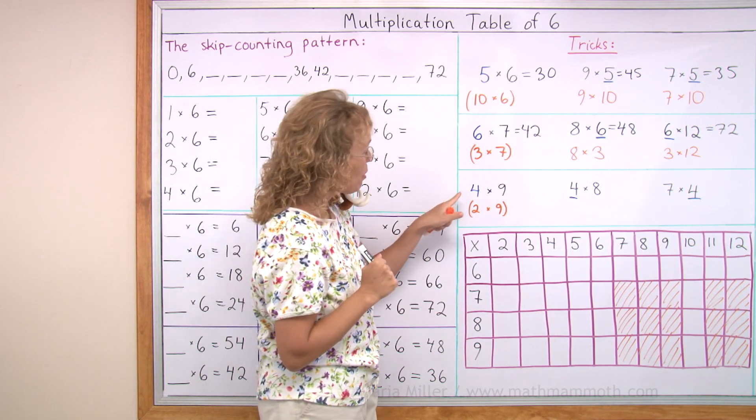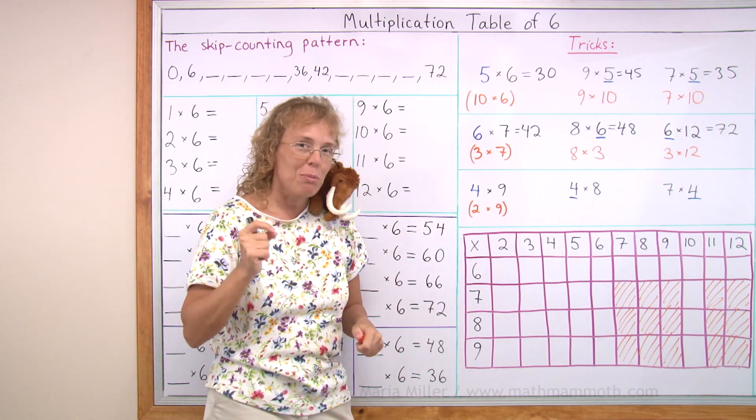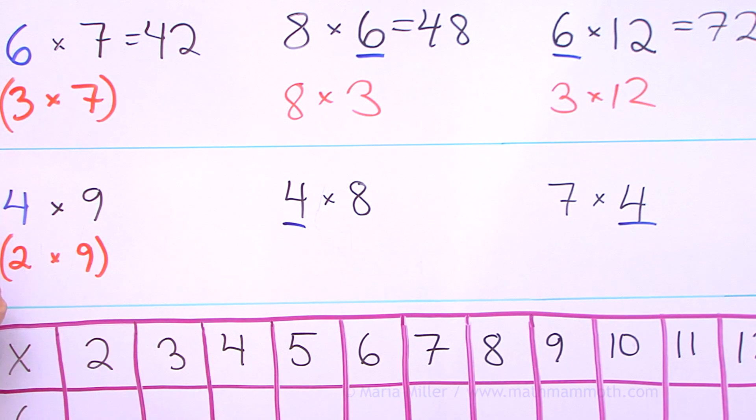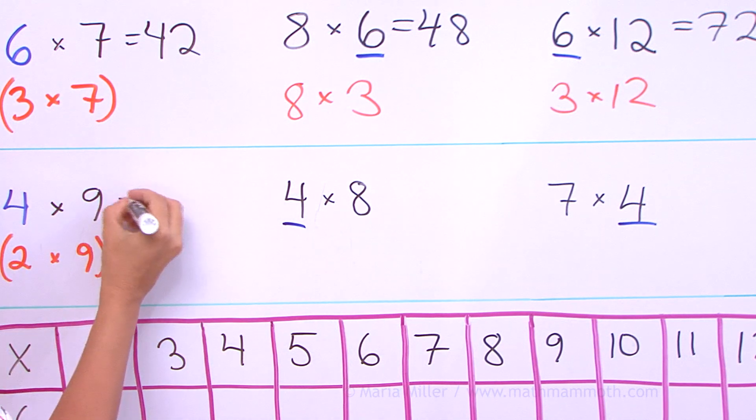And the same works for the table of 4. You can think of table of 2 and take double those answers. 4 times 9. Think of 2 times 9. That's easy. That's 18. And so 4 times 9 is double that, or 36.